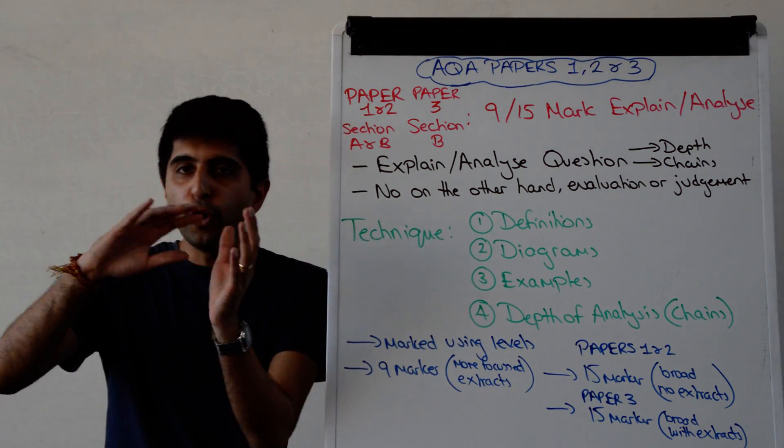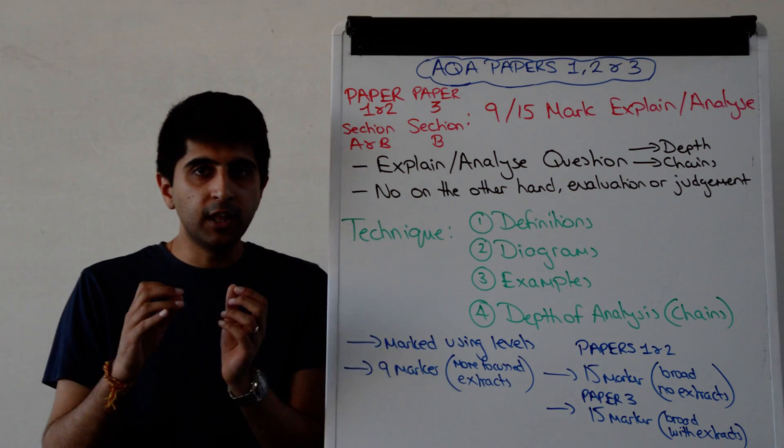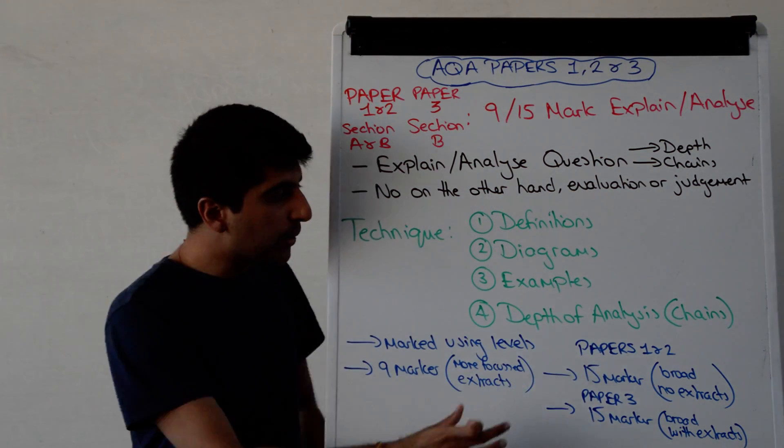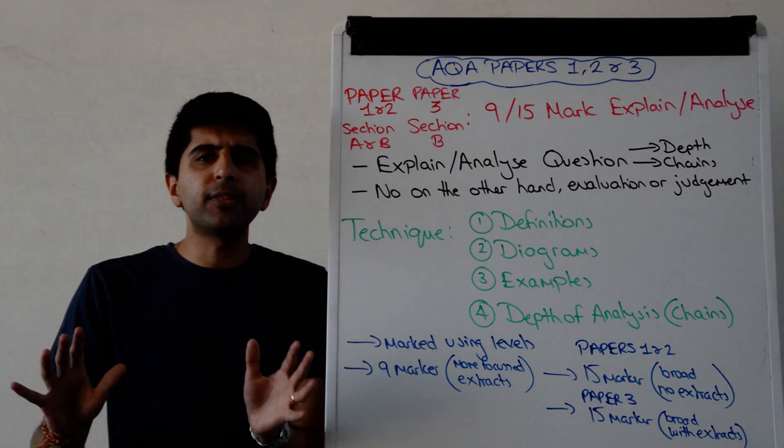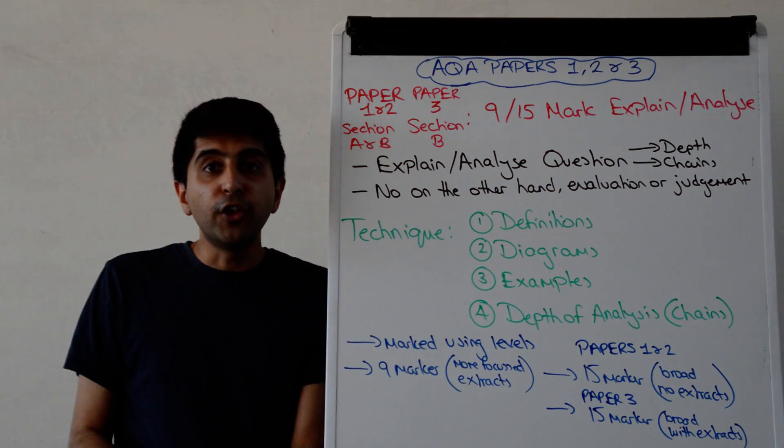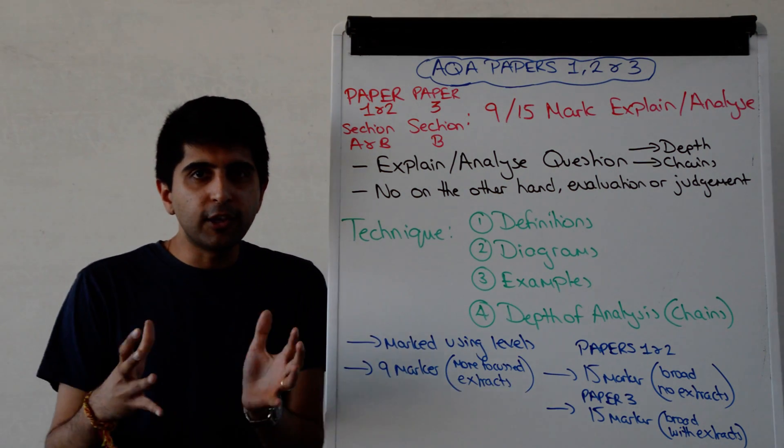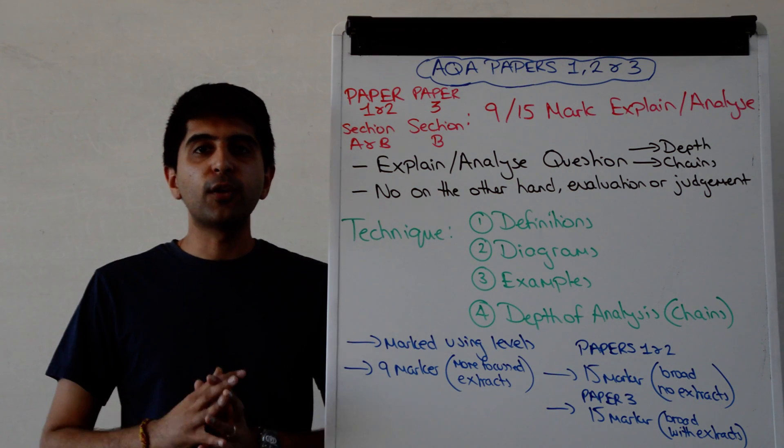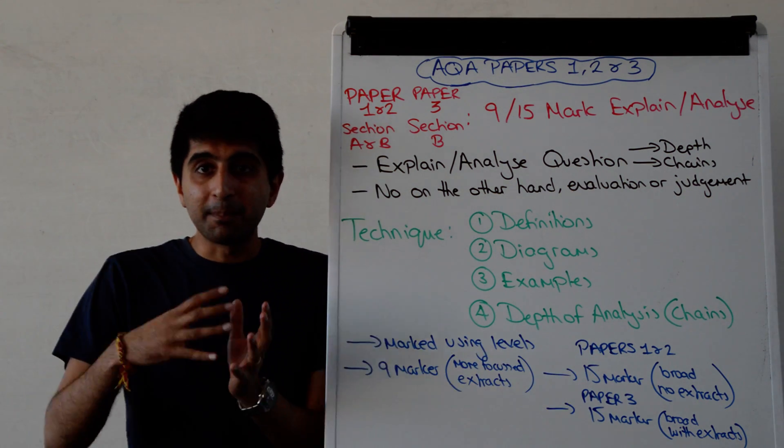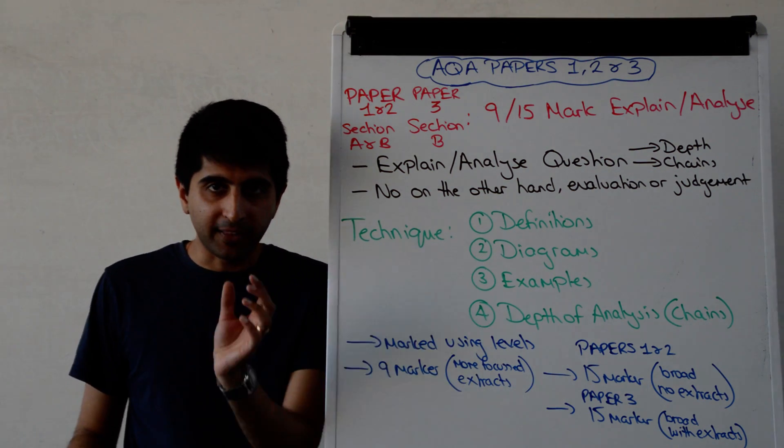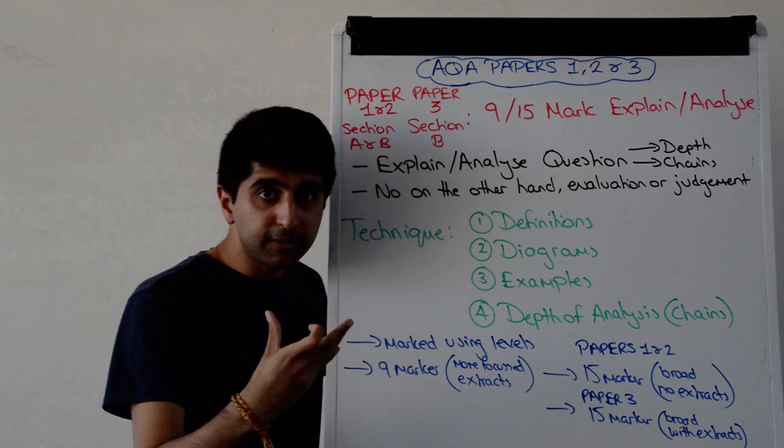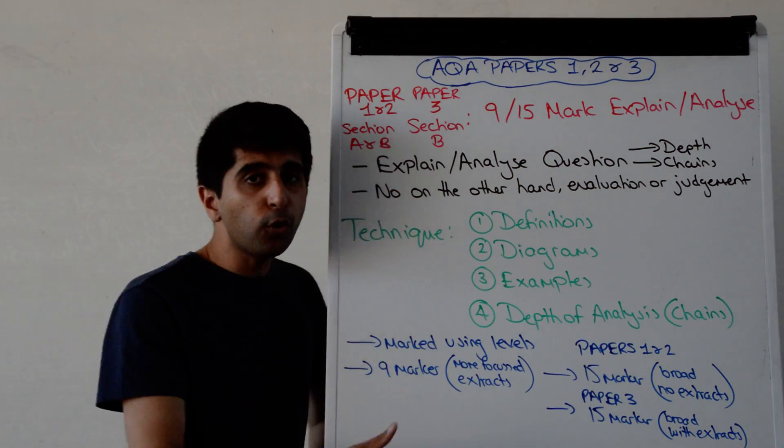In paper 3, the 15 marker, you've got loads of extract data there, source material to help you. But application is super important. How do you apply? How do you use your examples? You don't lump them in at the end of a paragraph. You don't lump them at the end of an essay. You don't write them in isolation. You use examples throughout your essay, integrated within your essay to back up the diagrams maybe that you're talking about, to back up the theory definitely that you're talking about. That's so important. So application is important for your depth of analysis to back up that, but also on your diagram.